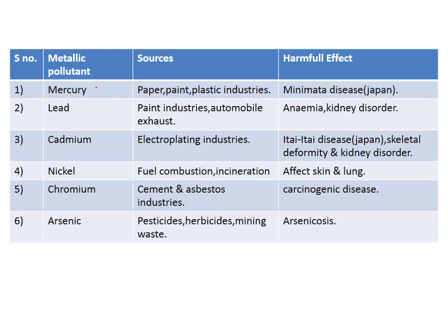Here is a list of harmful chemicals with their sources and effects. Mercury originates from paper, paint, and plastic industries, and causes Minamata disease. Lead originates from paint industries and automobile exhaust, causing anemia and kidney disorder. Cadmium originates from electroplating industries and causes Itai-itai disease, skeletal deformity, and kidney disorder.